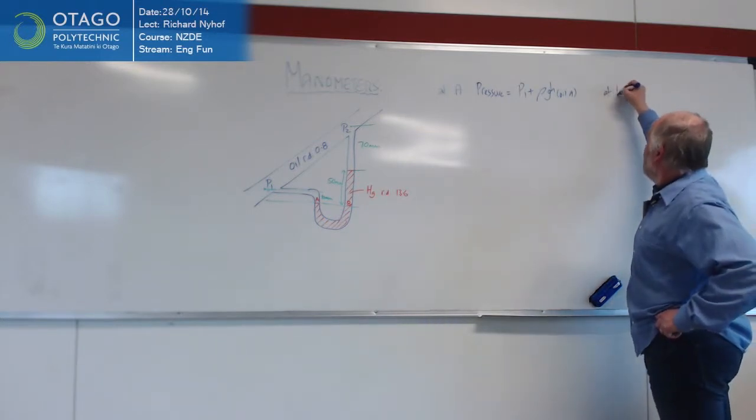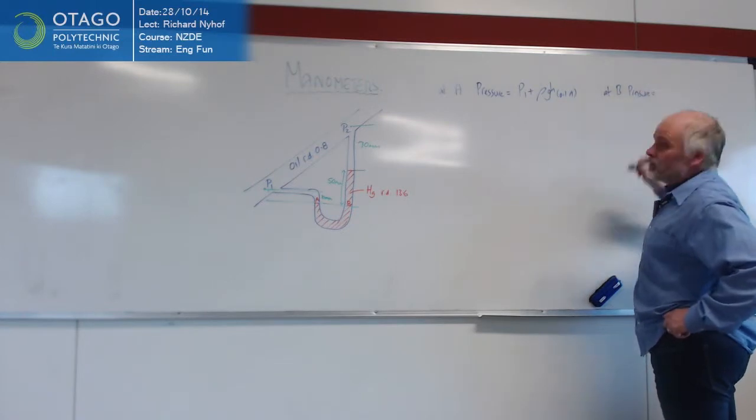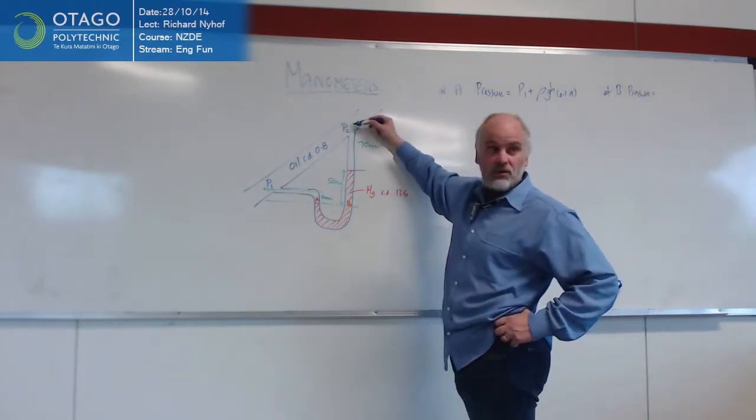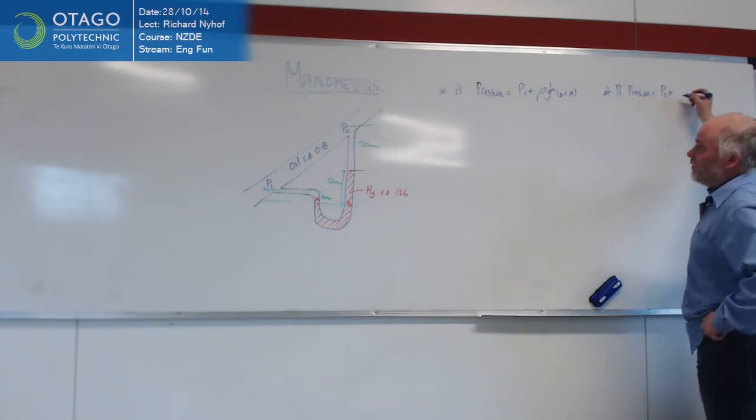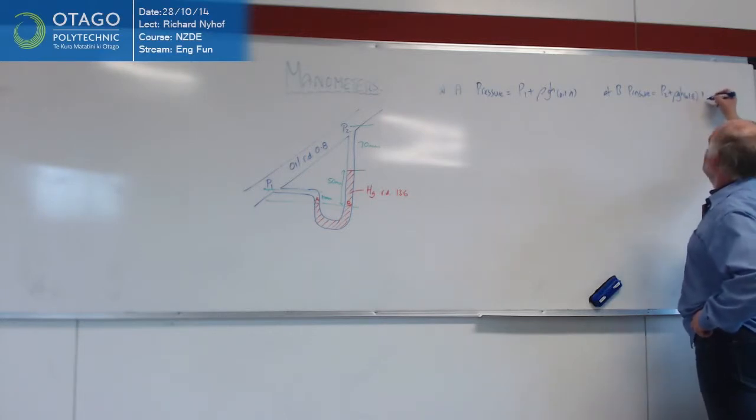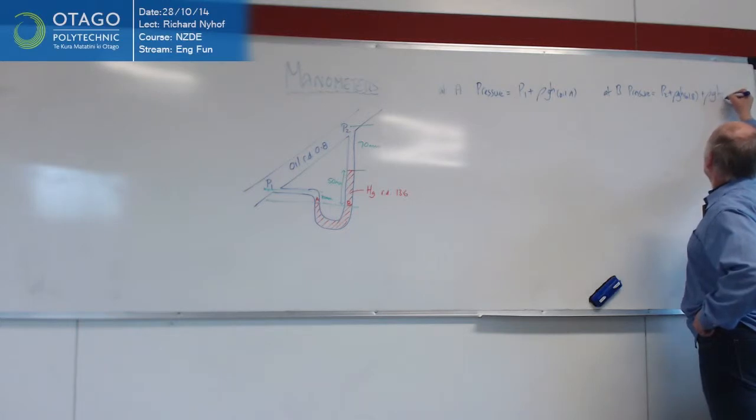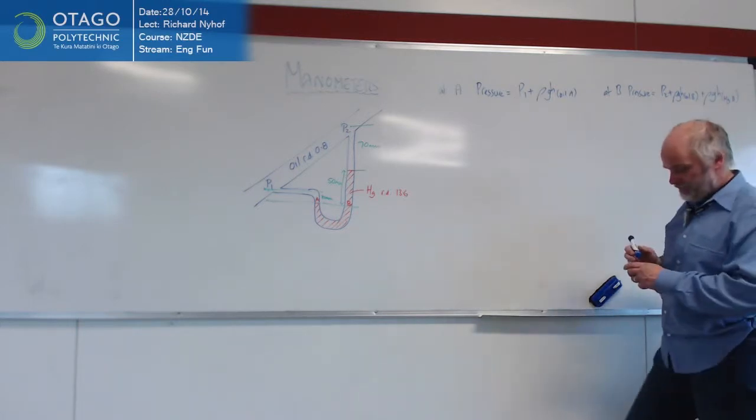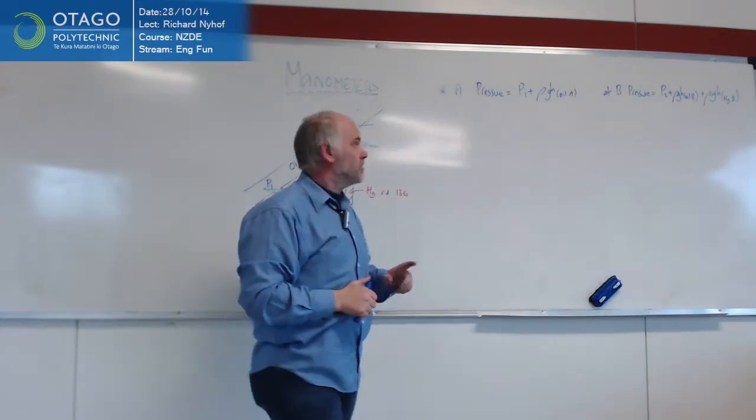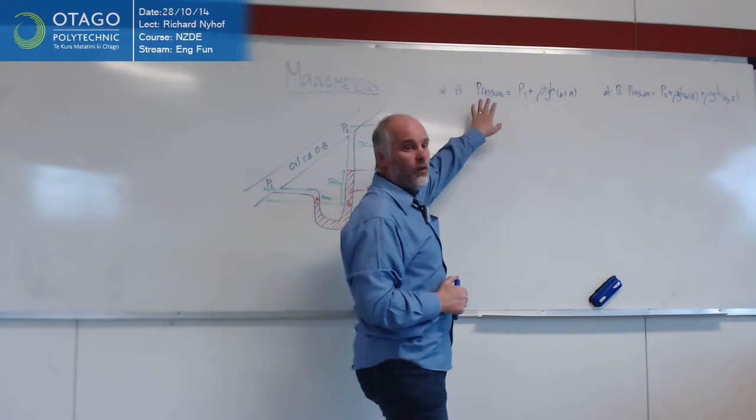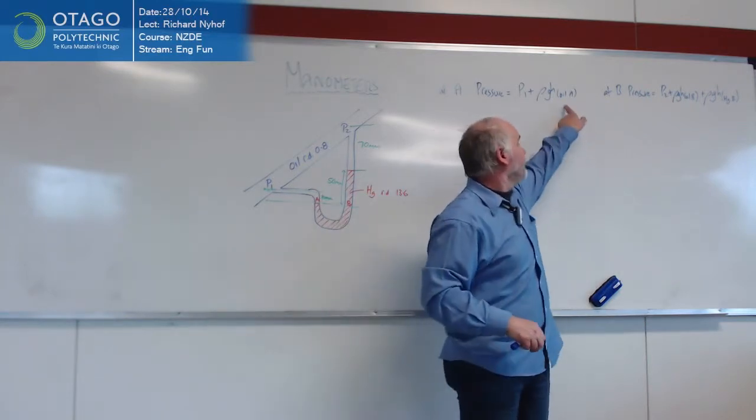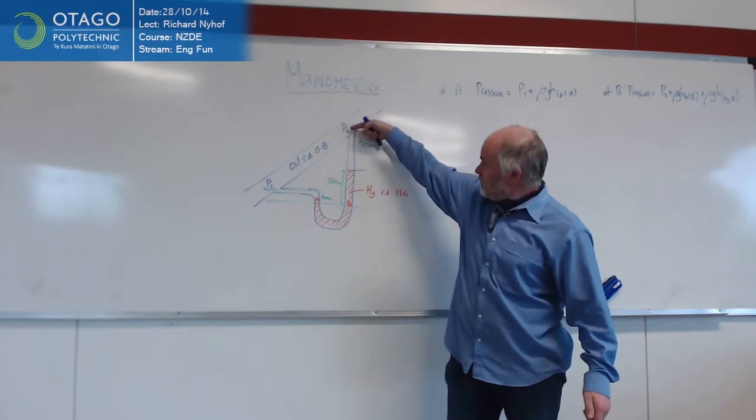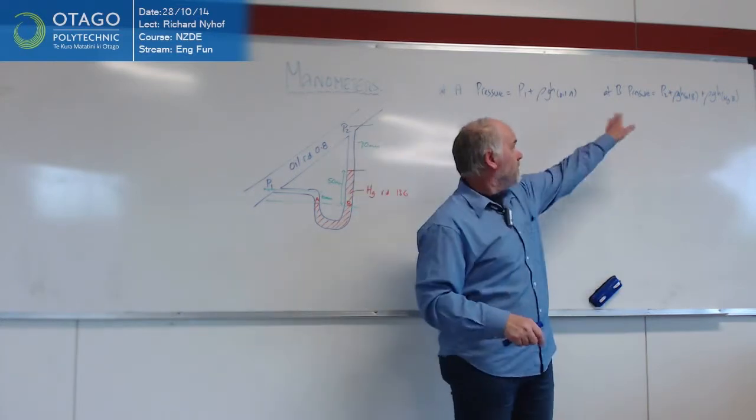And at B, the pressure is this pressure 2, whatever pressure that is pushing with, plus the head of oil above point B, plus ρgh of mercury above point B. So we've got two different pressures. One for point A, which is just the pipeline pressure plus the head of oil. And at point B, you've got the pipeline pressure plus a head of oil plus a head of mercury. You've got all those things going on.